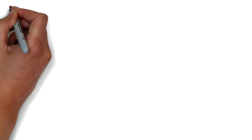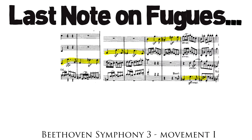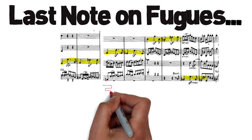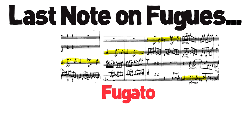I will look properly at fugues in a separate video because there's enough to say to make it worth doing thoroughly, but in sonatas you'll often find small passages which resemble a fugue with all its imitations. This kind of passage is normally called a fugato — meaning 'in the style of a fugue' — and you'll catch them surprisingly often if you're listening for them.